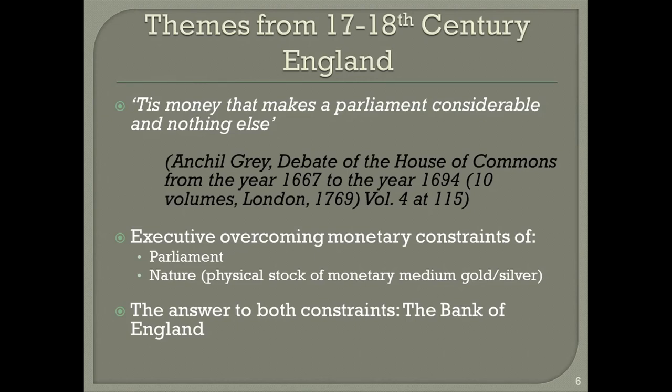As one English parliamentarian noted, ''Tis money that makes a parliament considerable, and nothing else.' On the one hand, parliamentary forces sought to install a constitutional monarch with limited powers. In response to these arrangements, regions constrained by these new arrangements — starting immediately with William and Mary of Orange — sought greater autonomy. The development of paper money and a system of central bank-mediated credit public finance developed in response to this dynamic, as a source of funding enabling executive power to grow beyond the limitations of Parliament.